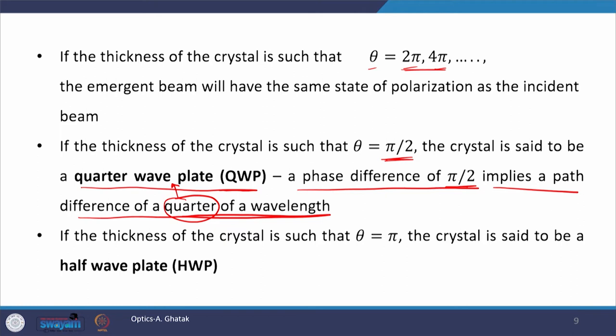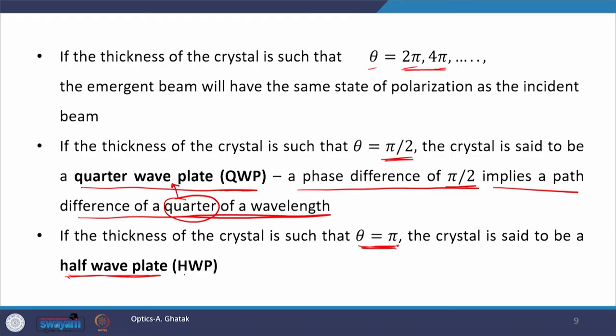Similarly, if the thickness of the crystal is such that the phase difference θ = π, then the crystal is called a half wave plate (HWP), because π is one half of the full circle 2π. This is equivalent to a path difference of half a wavelength. A crystal that introduces a phase difference of π is called a half wave plate, with acronym HWP.